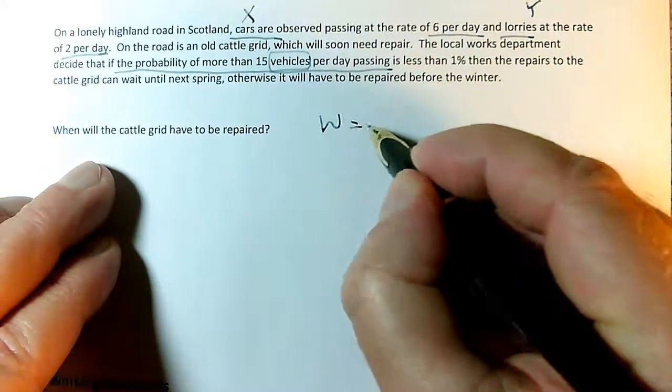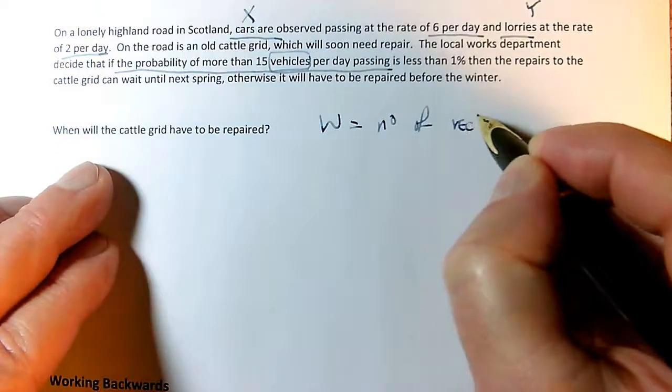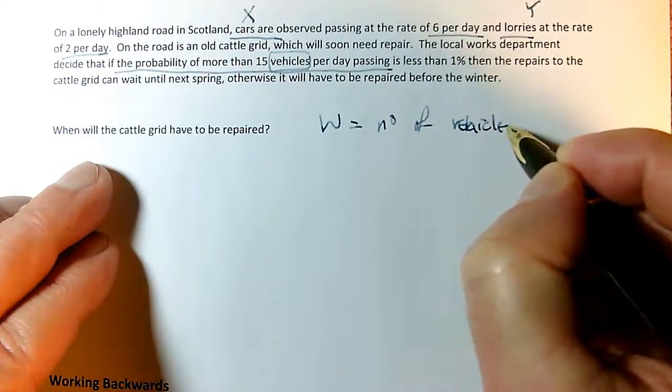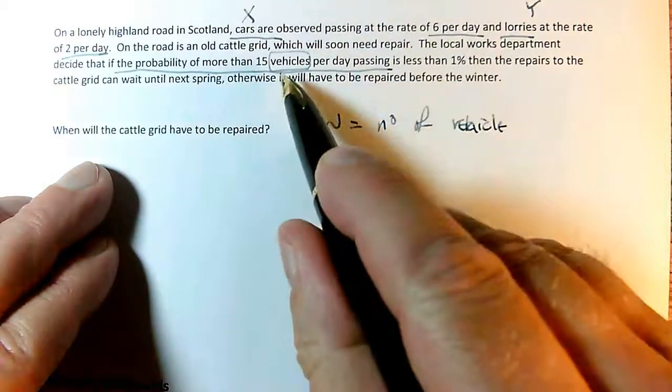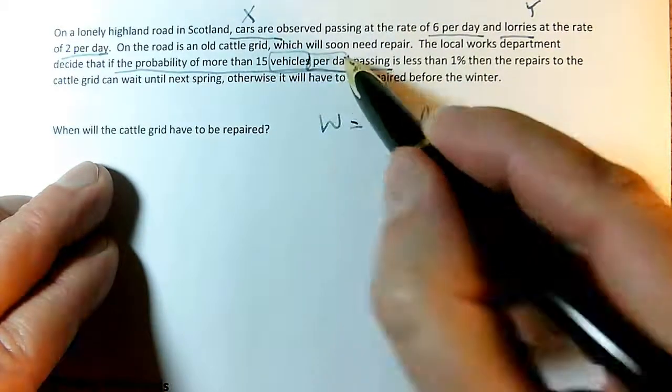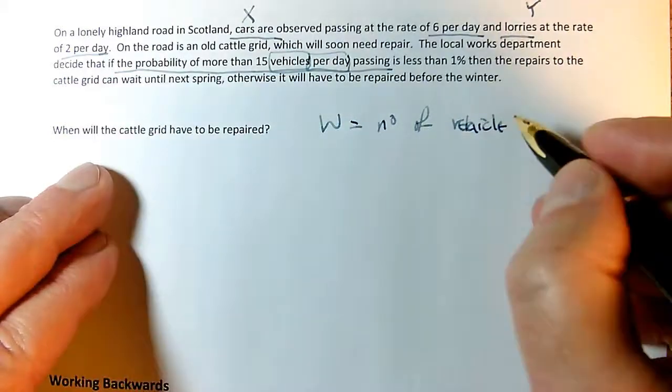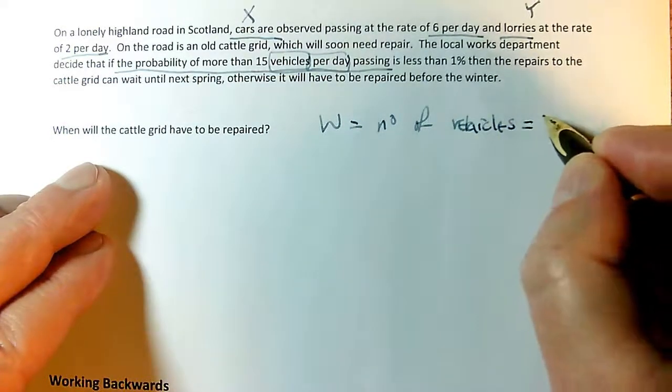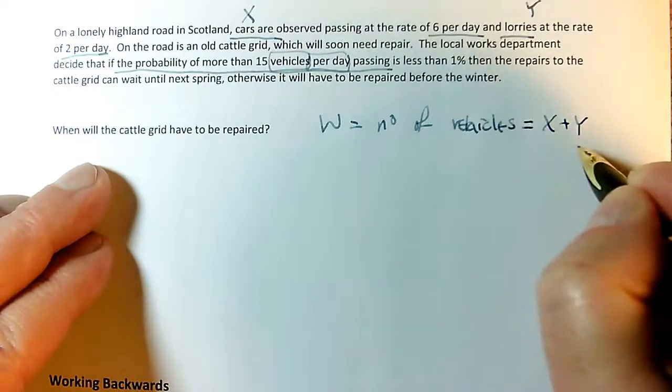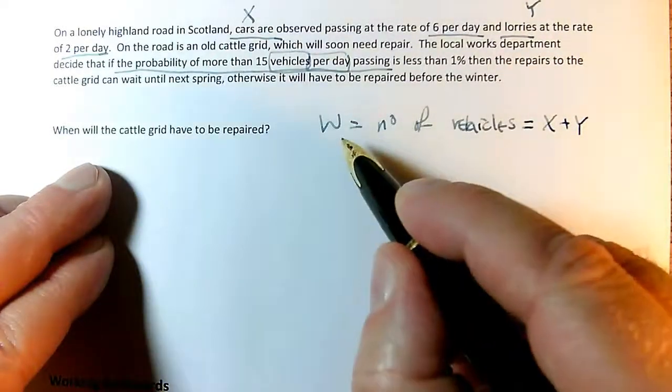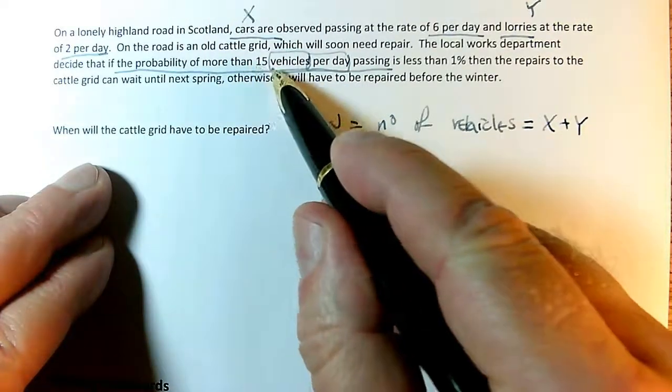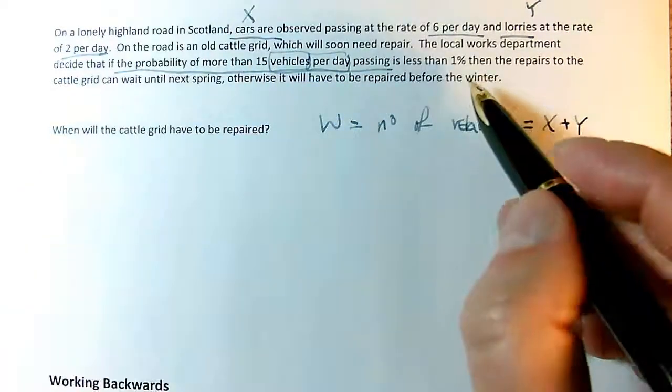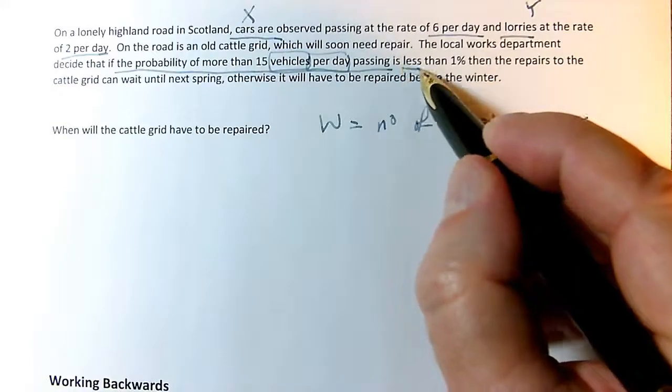If W equals the number of vehicles, I need to check - is this still in a day? Probability number of vehicles per day. I don't have to scale up the means, but I do need to take account of the fact that W, the total number of vehicles, is going to be X plus Y. The number of cars plus lorries, which I'm calling W, has to be more than 15 vehicles per day, with a given probability of 1%.